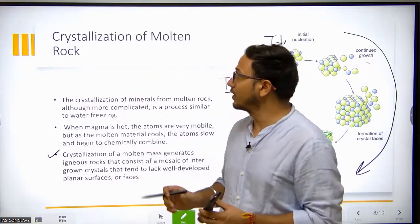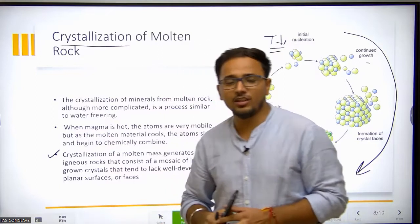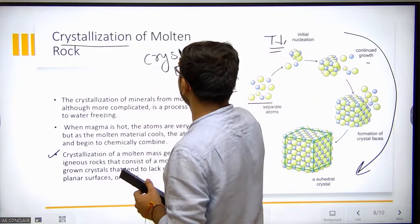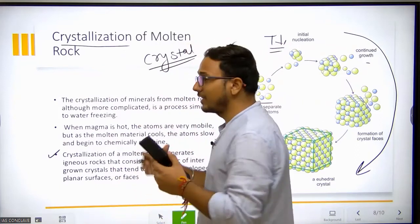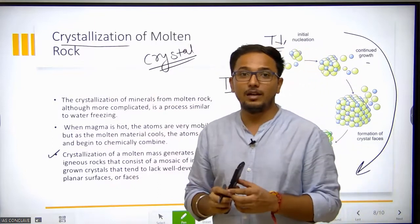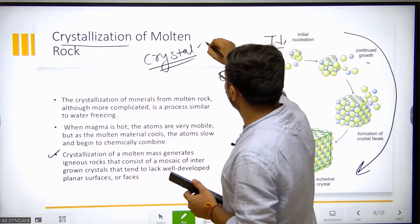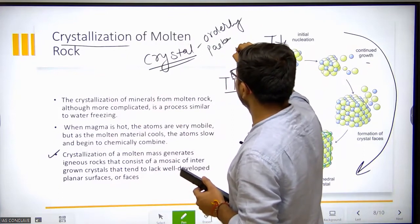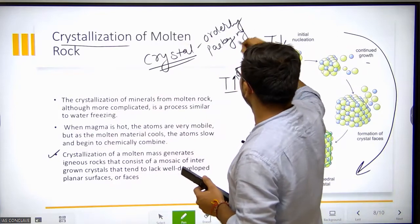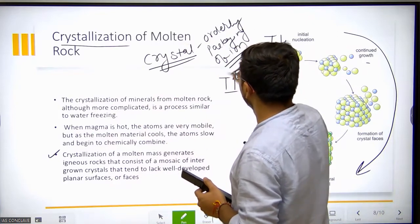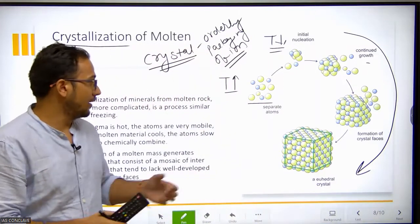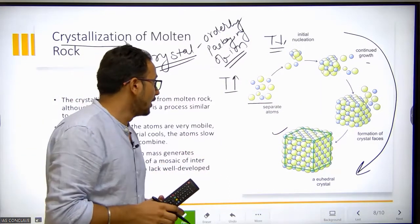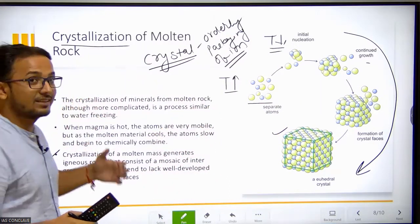Here we have to understand the term crystallization. Crystallization is a simple process of forming crystals. What is a crystal? A crystal is an orderly arrangement or orderly packaging of ions. This orderly packaging of ions can be in this fashion, can be elongated, can be in a platy fashion. So this is how molten rock crystallizes.